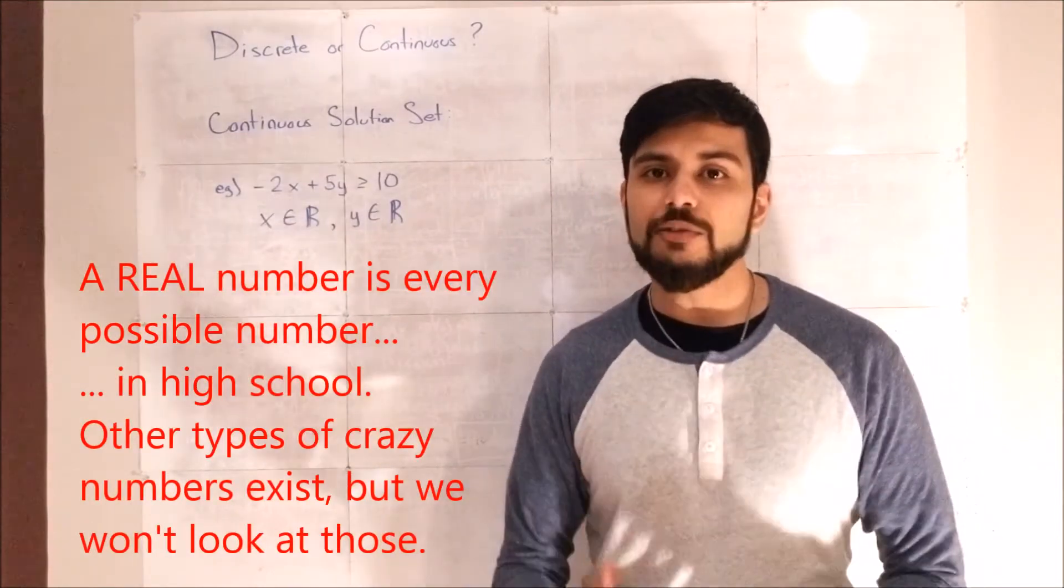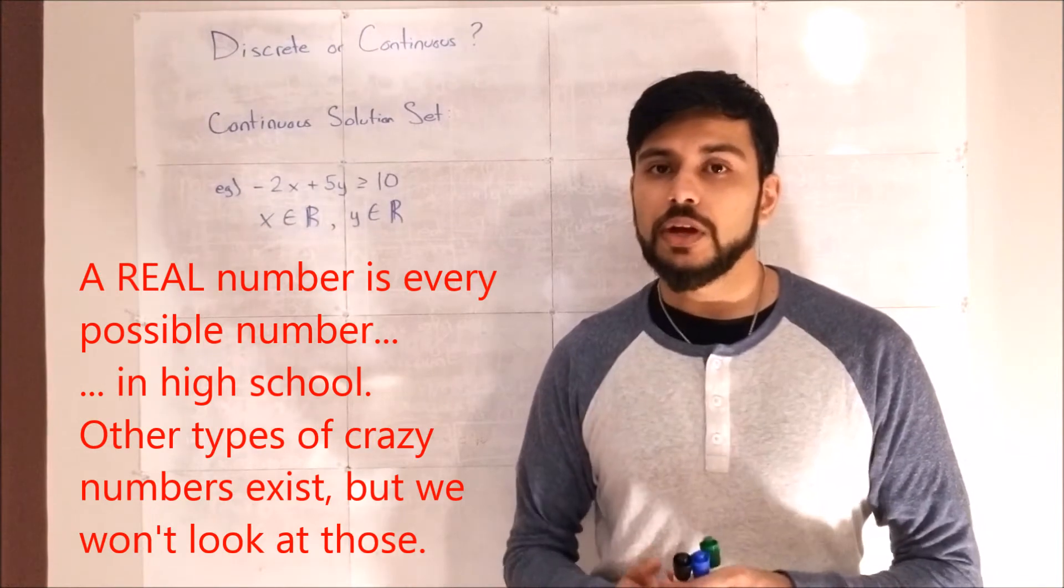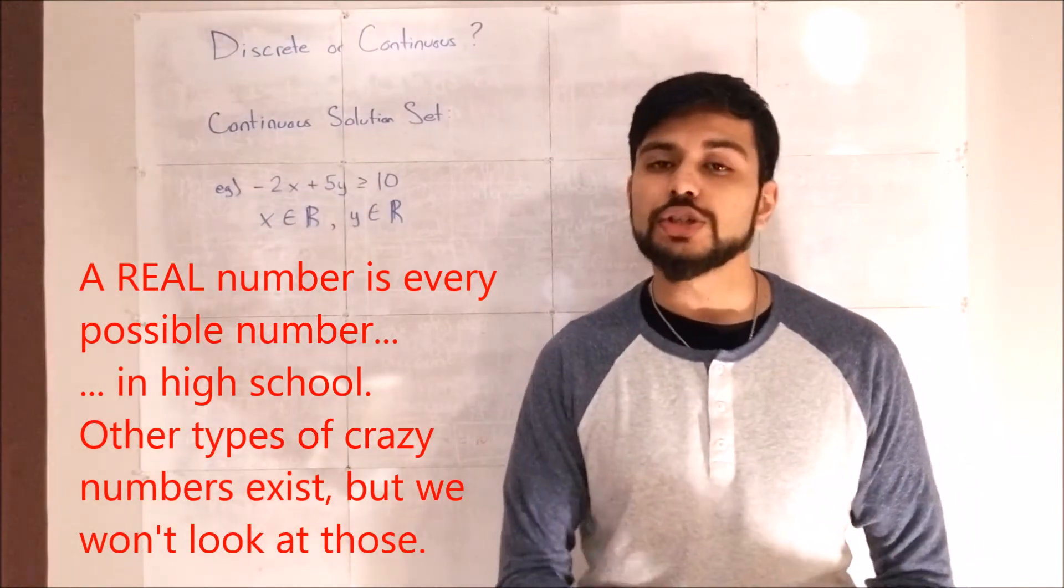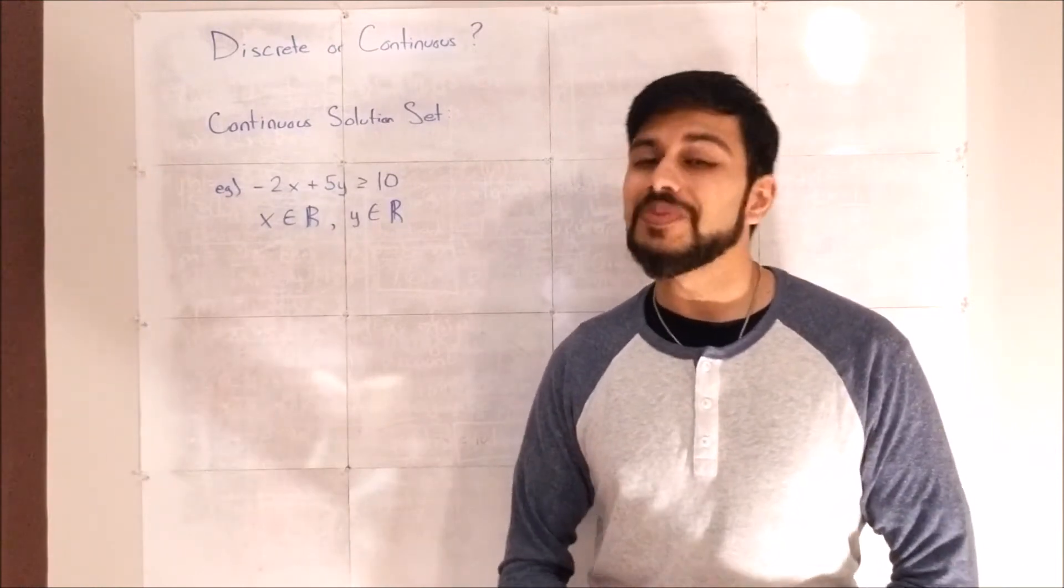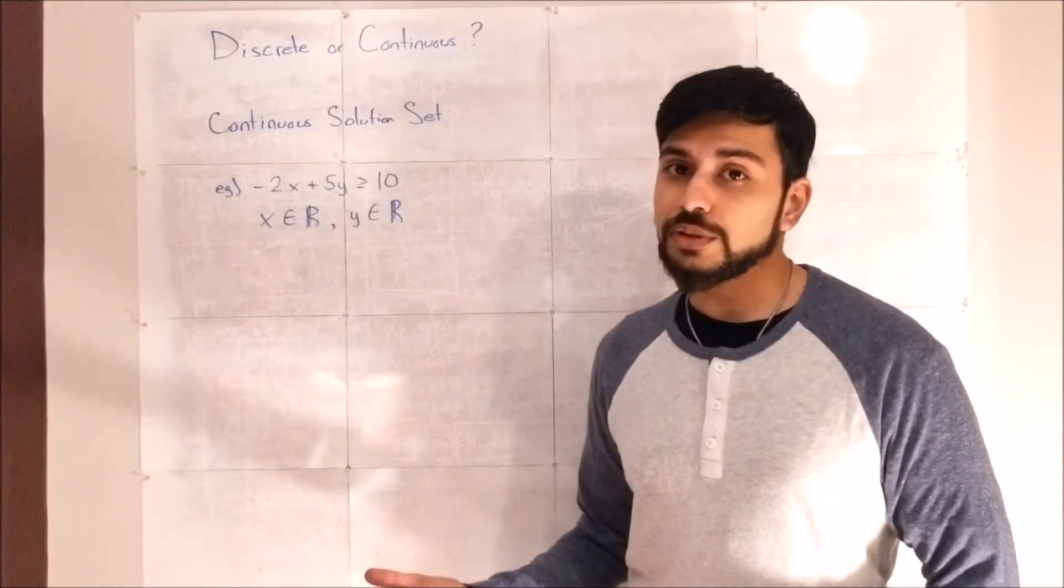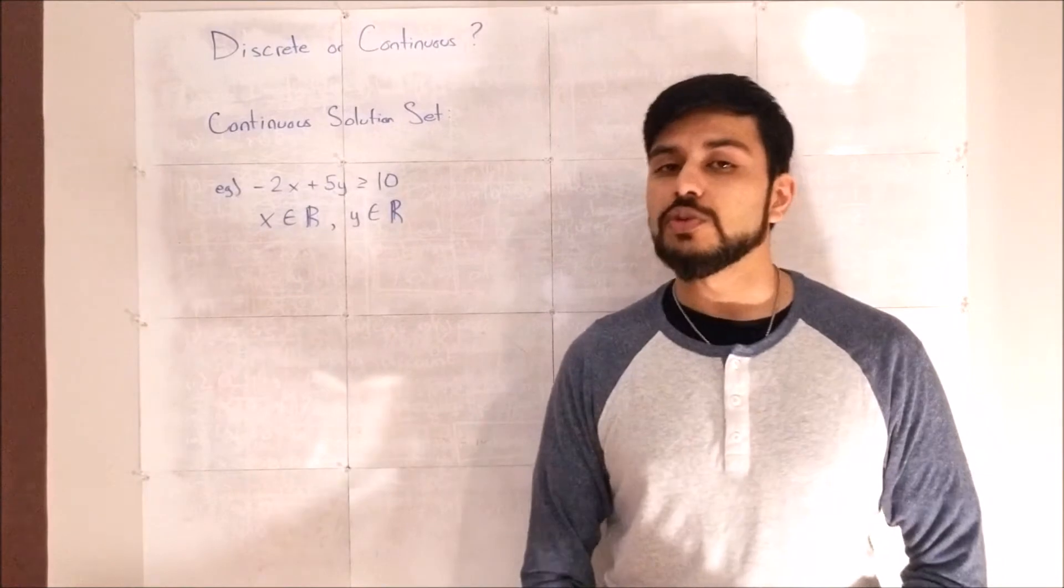Real numbers are every possible number. So it could be a decimal. It could be an integer. It could be a rational, irrational number. It could be anything. And if any number is fair, you have a continuous solution set.